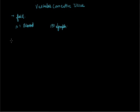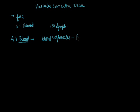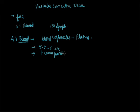First we will discuss blood. Blood is a fluid connective tissue or vascular connective tissue which is made up of two kinds of things: blood corpuscles, also called blood cells, and plasma. In our body, approximately 5.5 to 6 litres of blood is present. The blood formation process is called hemopoiesis, and this happens mainly in bone marrow.